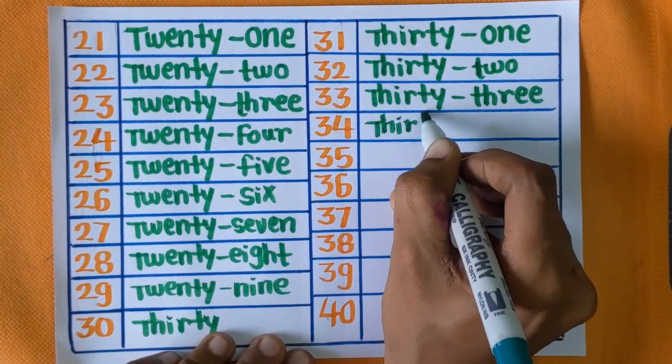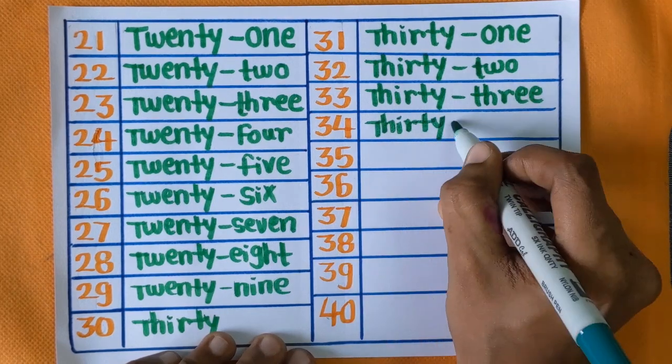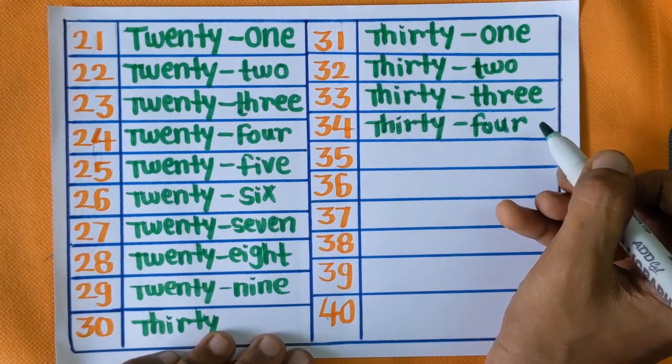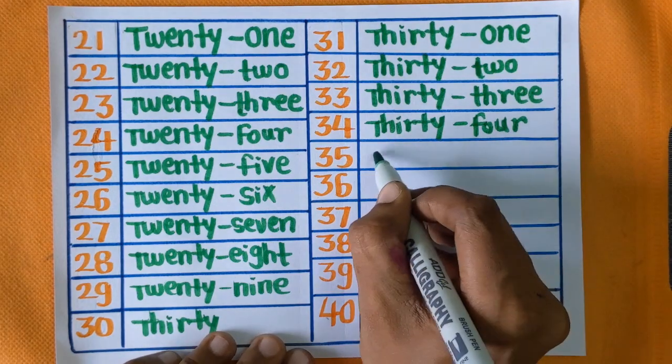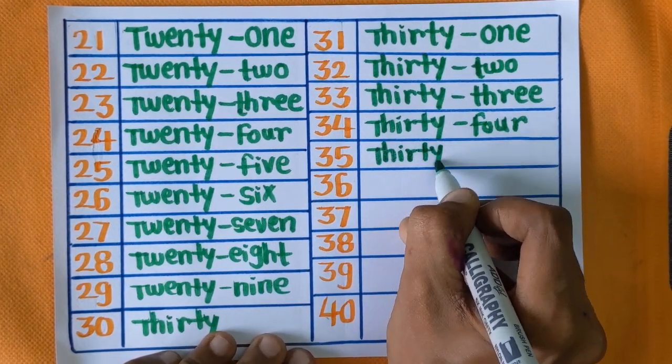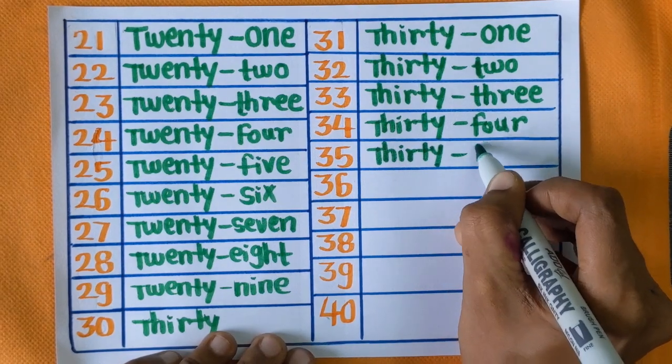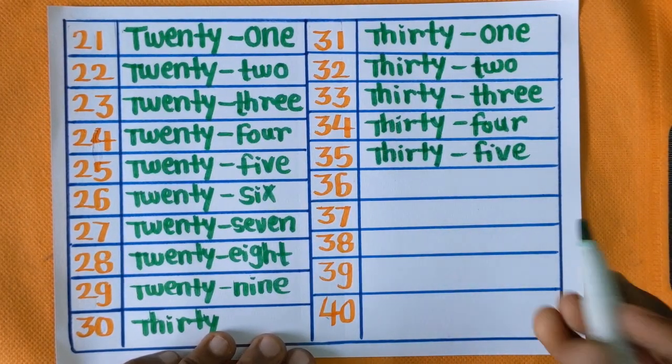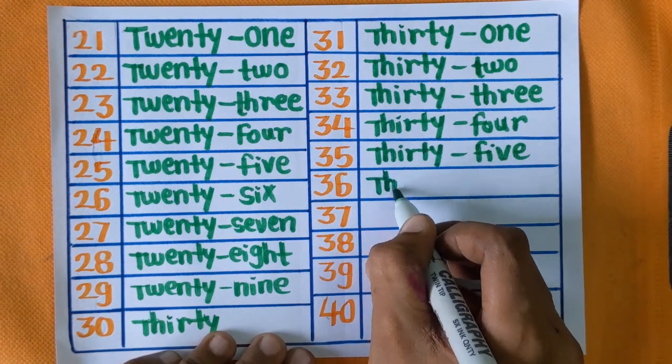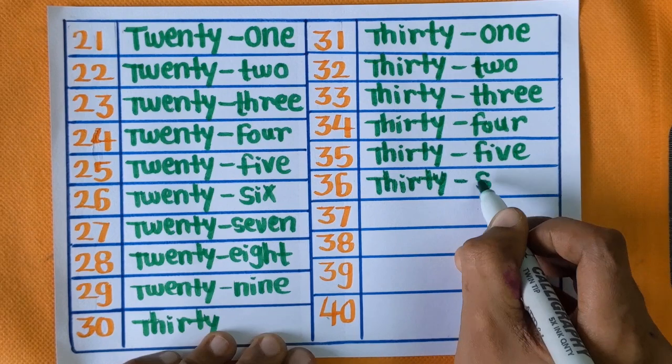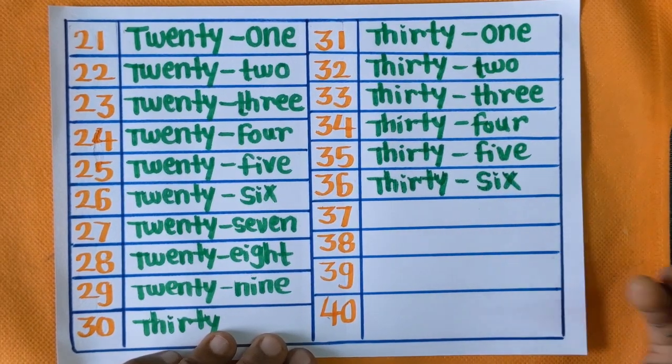Next is number 34: T-H-I-R-T-Y, F-O-U-R, 34. Next is 35: T-H-I-R-T-Y, F-I-V-E, 35. Next is 36: T-H-I-R-T-Y, S-I-X, 36.